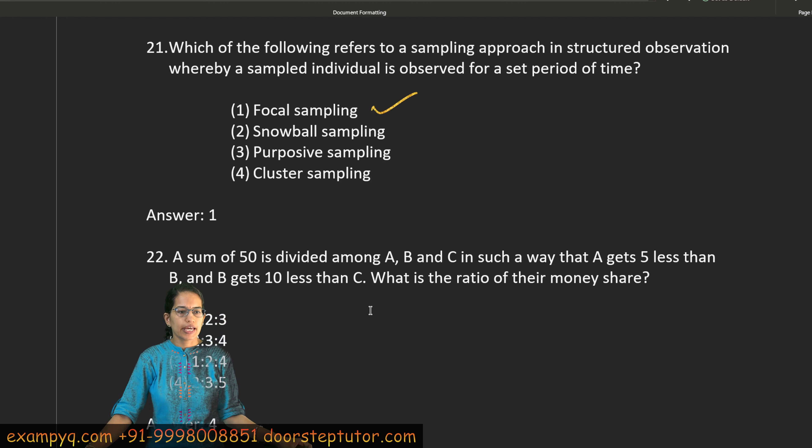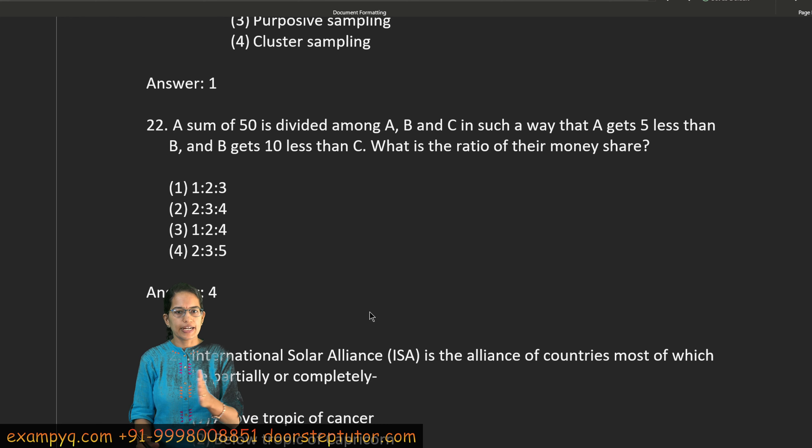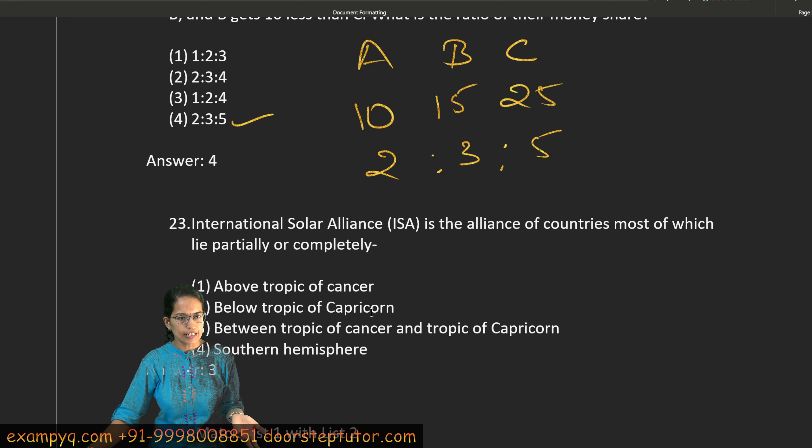The next question is, a sum of 50 is divided in such a way that A gets 5 rupees less than B, and B gets 10 rupees less than C. Let's assume that C gets 15 rupees, then B gets 10 rupees, and A gets 5 rupees. Now if you add it, 5 plus 10 plus 15 becomes 30, but it should become 50. So this becomes 10, 15, and 25. Now this is a simple ratio, so it becomes 2 to 3 to 5. So the fourth answer will be correct.